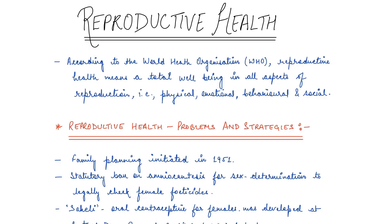Hey guys, welcome back to Unstop Biology. I hope you all are doing good. So in today's video, we are going to very quickly cover the fourth chapter of Class 12th NCERT Biology, which is Reproductive Health. It's not much there as such, but I do not want to skip any chapter. So we'll cover it in just one video.